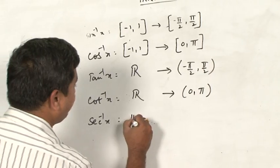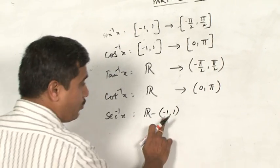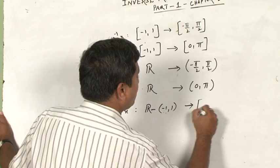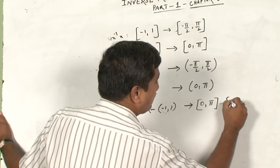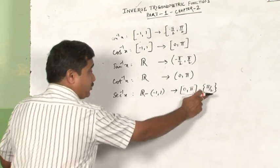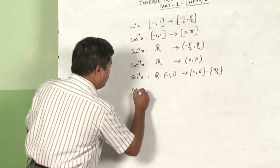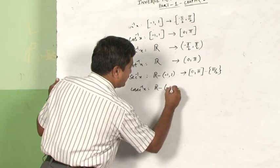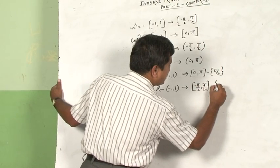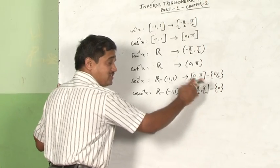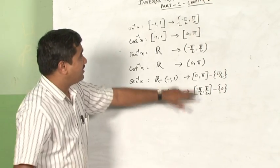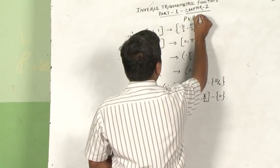Secant inverse x goes from ℝ minus the open interval (-1, +1), because -1 and +1 do not appear in secant, mapping to [0, π] excluding π/2, since cosine is 0 at π/2 and secant does not exist there. Cosecant inverse x goes from ℝ minus (-1, +1), mapping to [-π/2, +π/2] excluding 0, because sin is 0 at 0 making cosecant undefined. These are all what we call principal value branches.